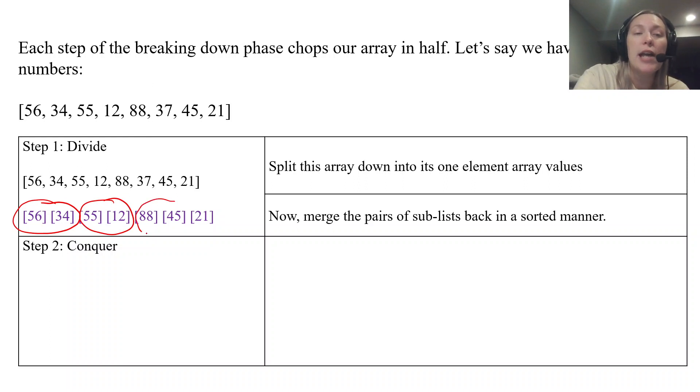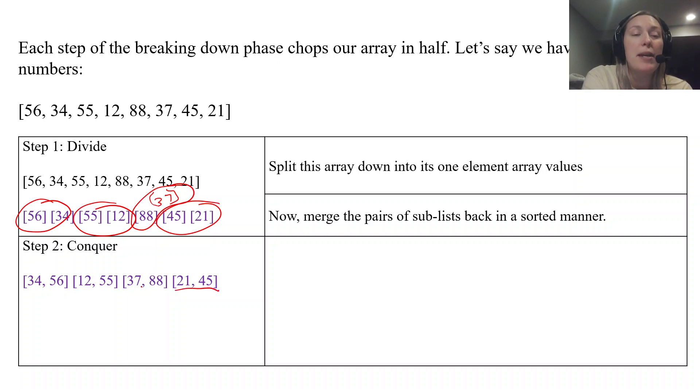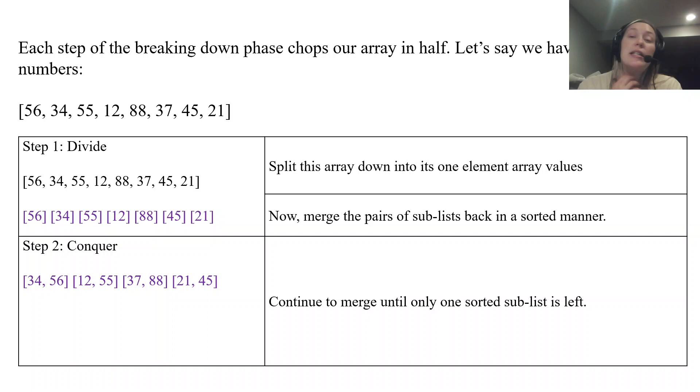It merges 56 and 34, it'll merge 55 and 12, 37 and 88 get merged together, and then finally 45 and 21. Each time it comes together it will make sure that they are in order. It continues this until only one sorted sub-list is left. Right now we have four sub-lists so we need to do some more merging.